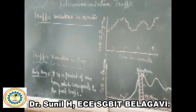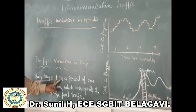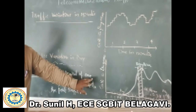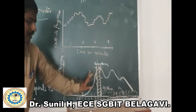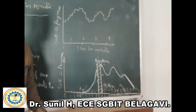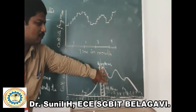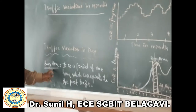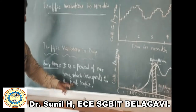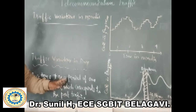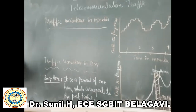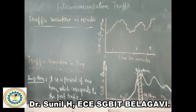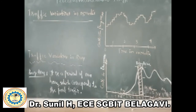The busy hour is defined as a period of one hour which corresponds to the peak traffic. In this figure, 10 to 11 has the peak value compared to the morning, afternoon, and evening sessions. Now let us go through some problems based on how traffic is to be calculated with respect to calls and in terms of Erlangs.